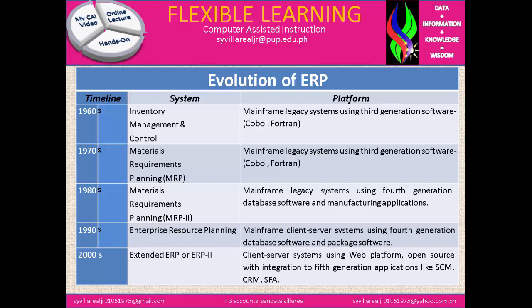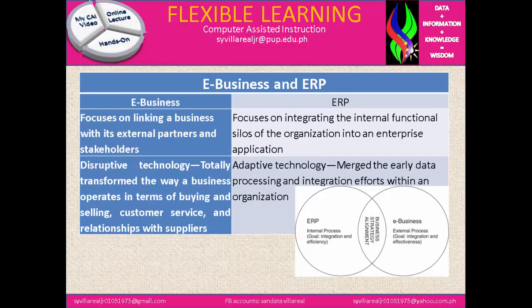Now, e-business and ERP: e-business focuses on linking a business with its external partners and stakeholders, while ERP focuses on integrating the internal functional silos of the organization into an enterprise application. In e-business, disruptive technology totally transformed the way a business operates in terms of buying, selling, customer service, and relationships with suppliers. Under ERP, adaptive technology merged early data processing and integration efforts within an organization.